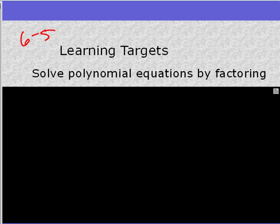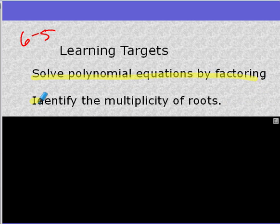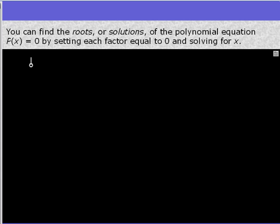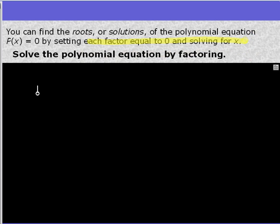Alright, so first thing we're going to do is solve polynomial equations by factoring, and then we're going to identify the multiplicity of roots. We're going to be doing that by graphing on our graphing calculators. So we can find roots of polynomial equations by setting each factor equal to 0 and solving for x. This is exactly what we did for quadratics, it's just with polynomials we usually have more than two roots. So let's look at an example, and we practiced factoring last time, so we're going to be using some of those skills today.